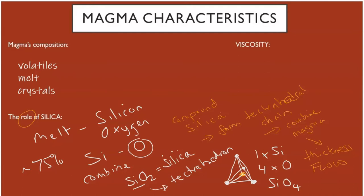This brings us to the term viscosity, which is defined as the resistance to flow or move. A high viscosity means a thicker, slower liquid. A lower viscosity magma will flow more quickly over a surface as lava. So viscosity is a large and important characteristic of magma, which is controlled by silica.